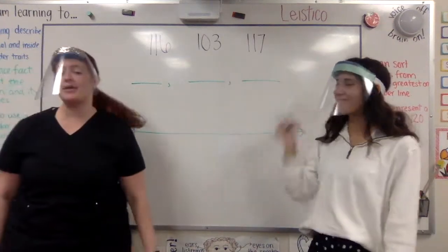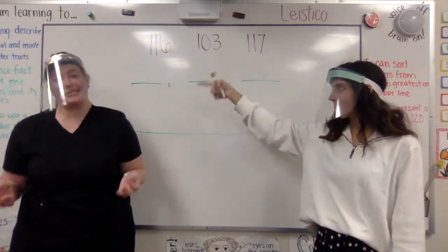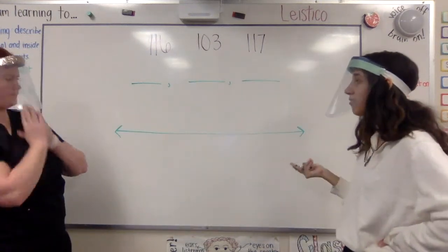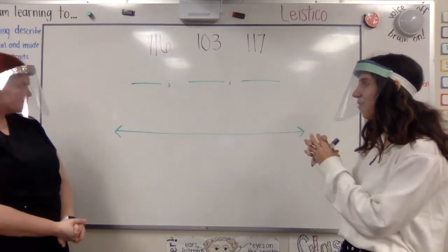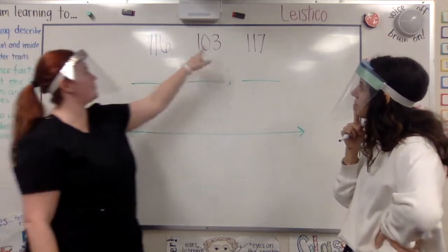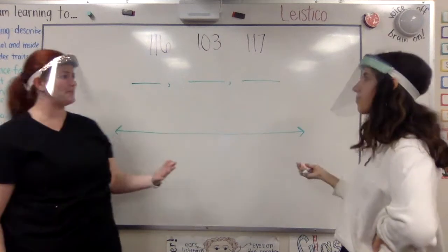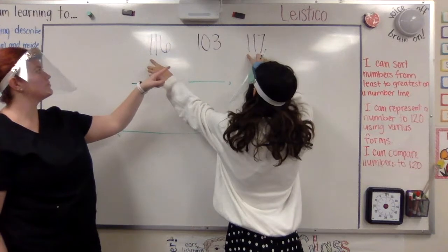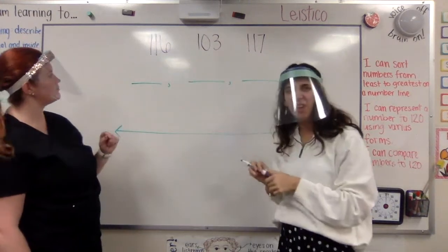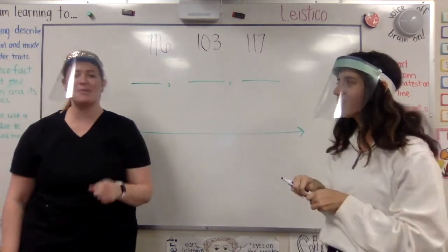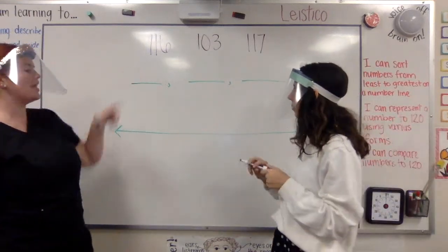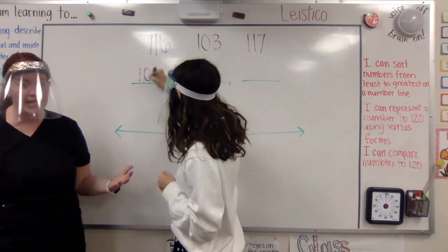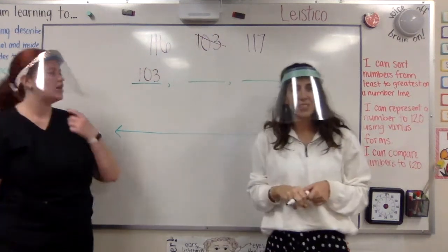Okay. Let's take these three numbers now and see if we can order them from least, smallest, to greatest, biggest. Well, first we have to look for our least or smallest number. Well, all of the numbers have 1 in the hundreds, Ms. Lustico. That's right. Oh, but I'm noticing that these two numbers have a 1 and then another 1, but this one has a 0 in the tens place. I think that one must be our least number. So we're going to put 103 first because that's our least number because it has 0 tens but the other numbers have tens. That's right.